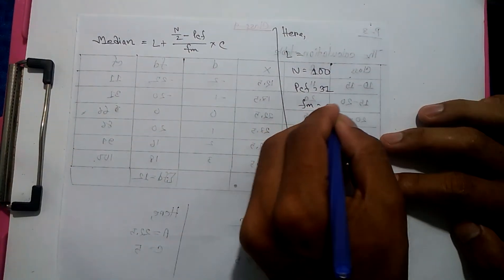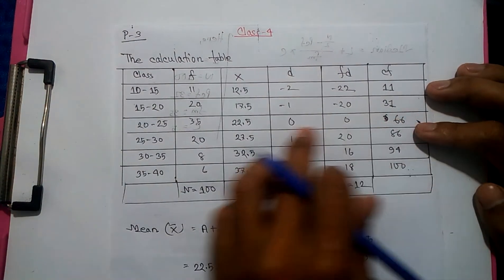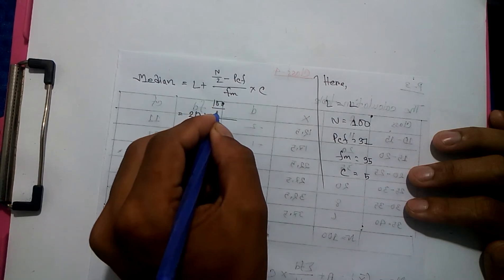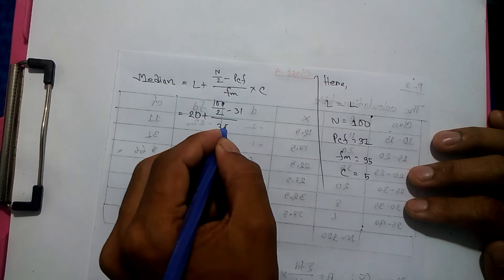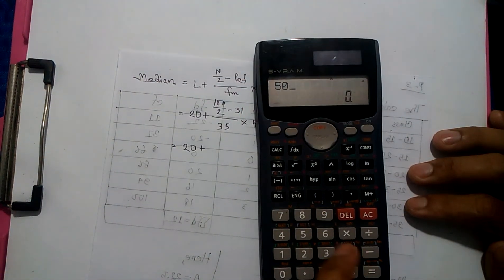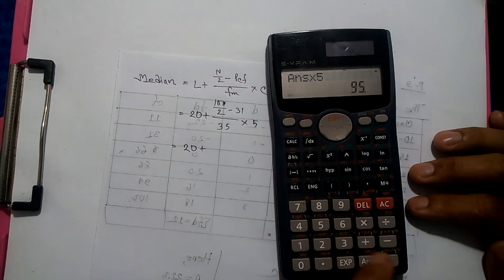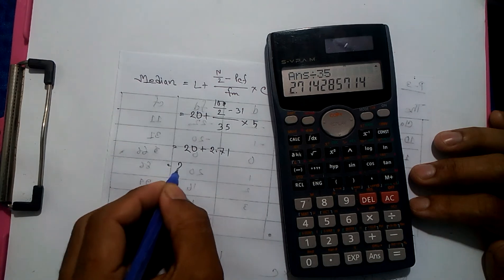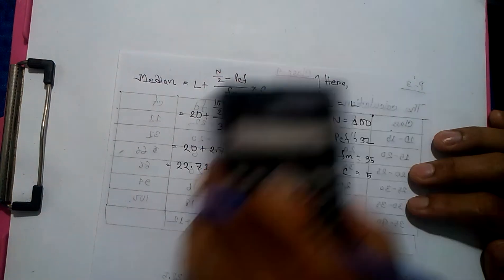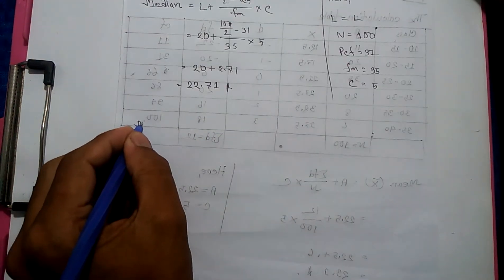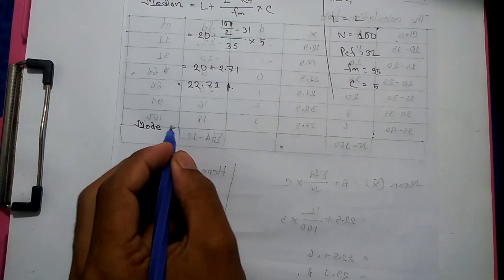For the median: FM is 35. The lower class interval L is 20. We identify the median class from the cumulative frequency table and plug in the values for L, FM, PCF, and c.